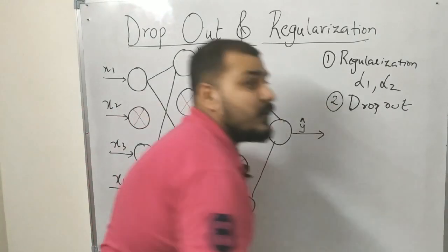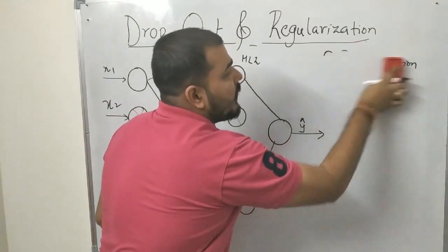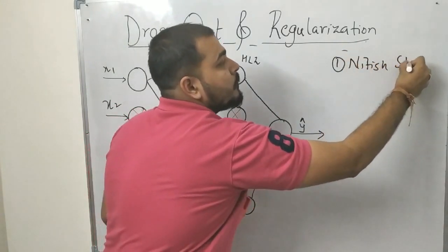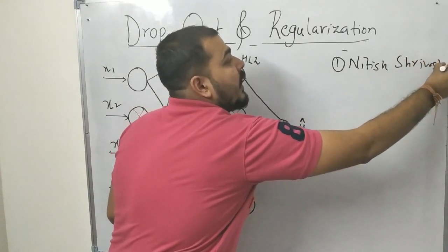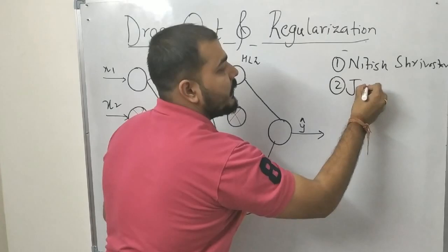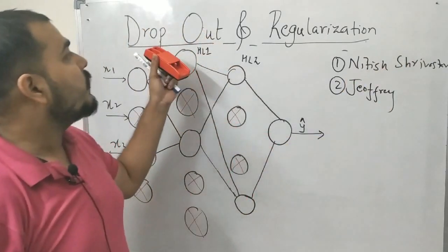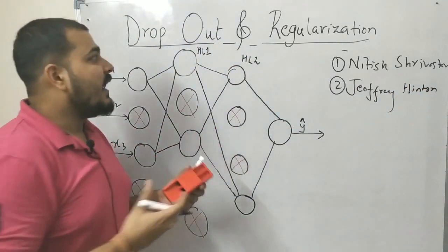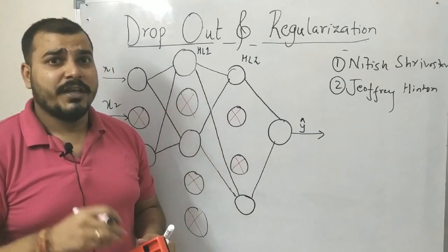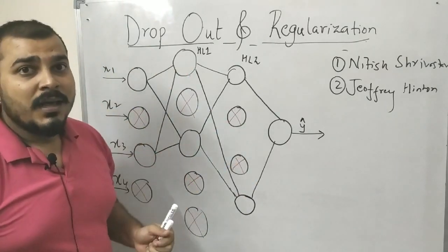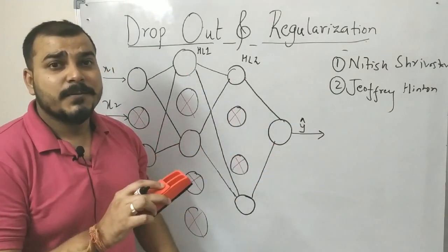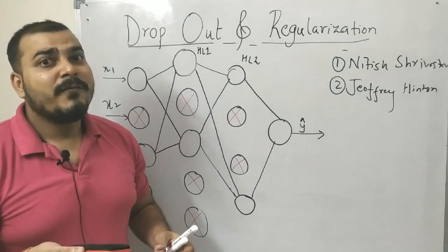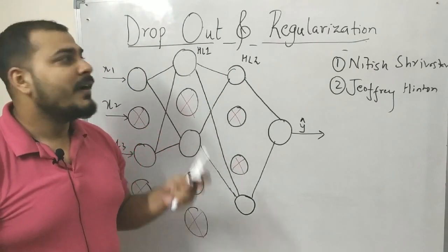This dropout thesis was written in 2014 by two people: Nitish Srivastava and my favorite, Geoffrey Hinton. Nitish Srivastava's thesis was all about dropout — he was a student of Geoffrey Hinton, and this thesis came around 2013–14. I'll provide the thesis paper URL in the description box so you can go and read it, and after this explanation it will be much easier to understand.